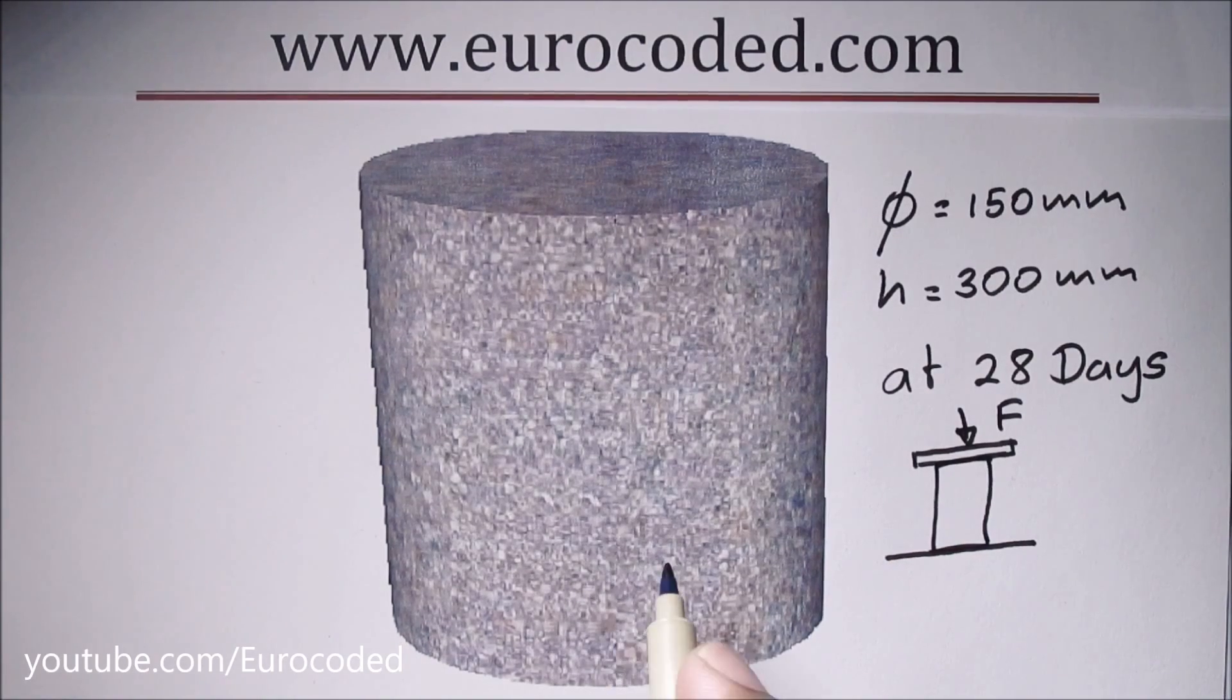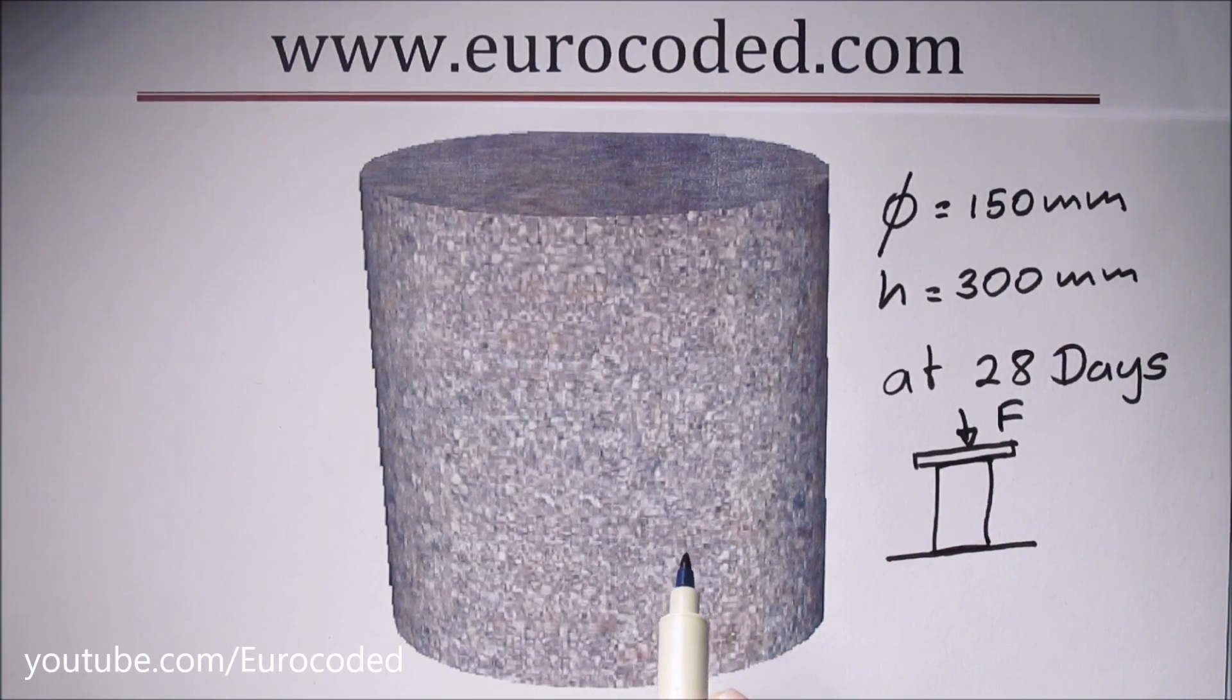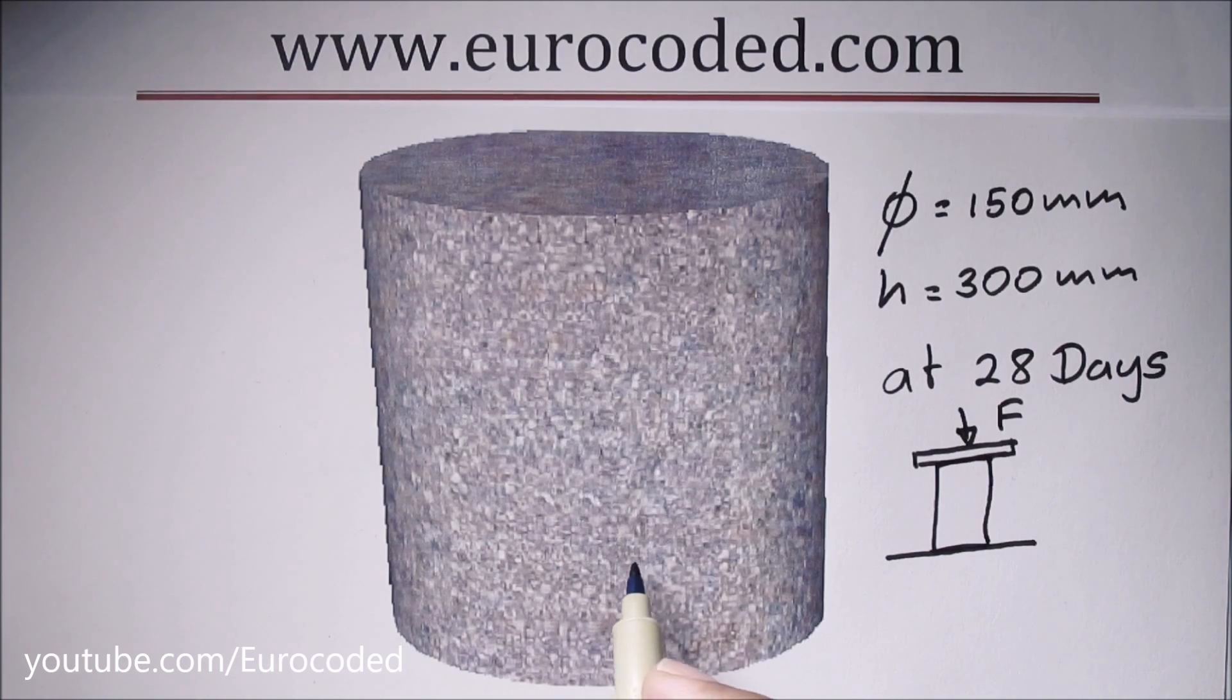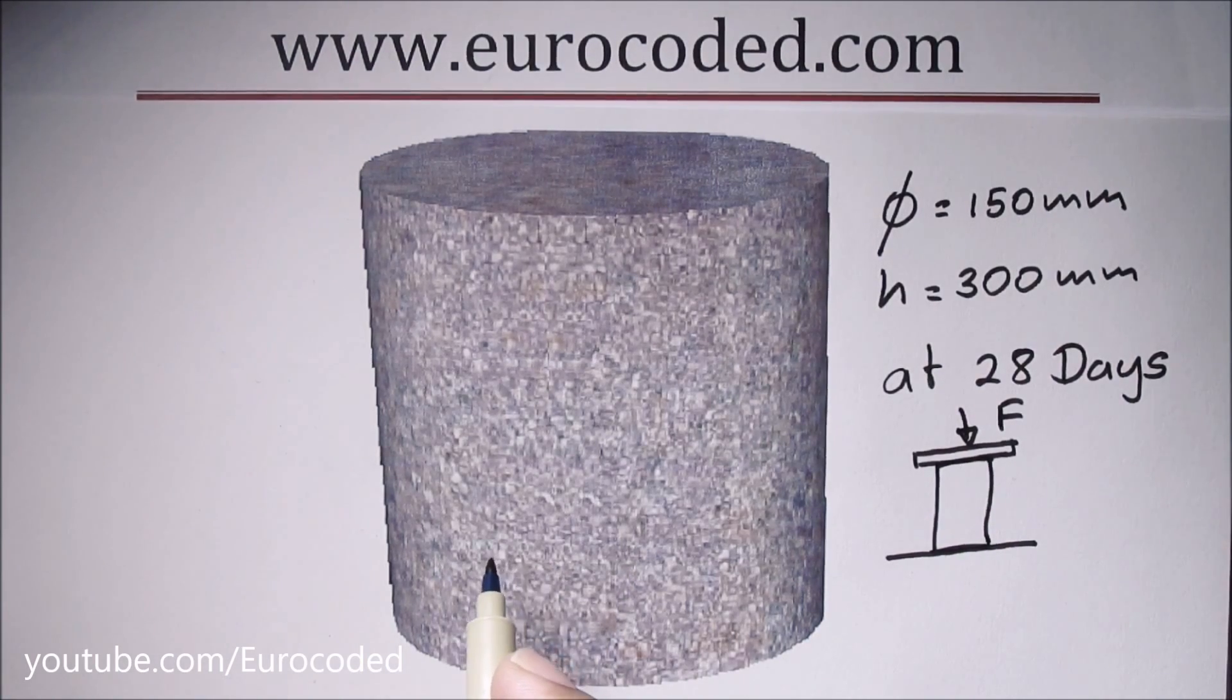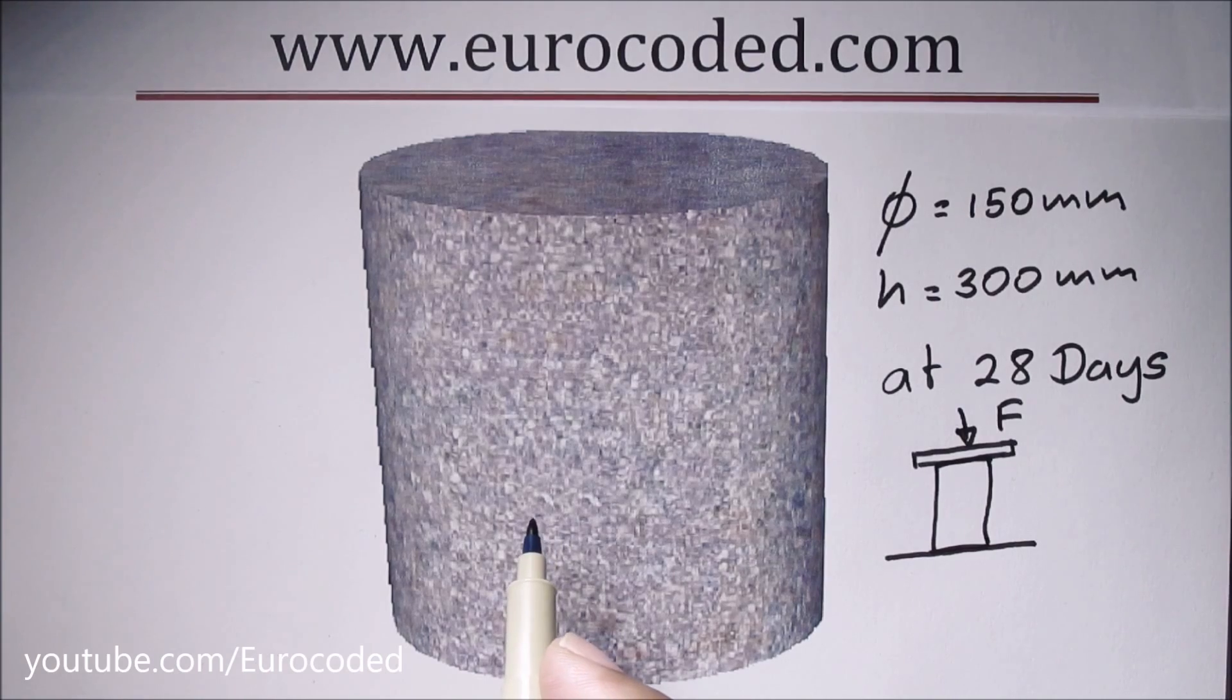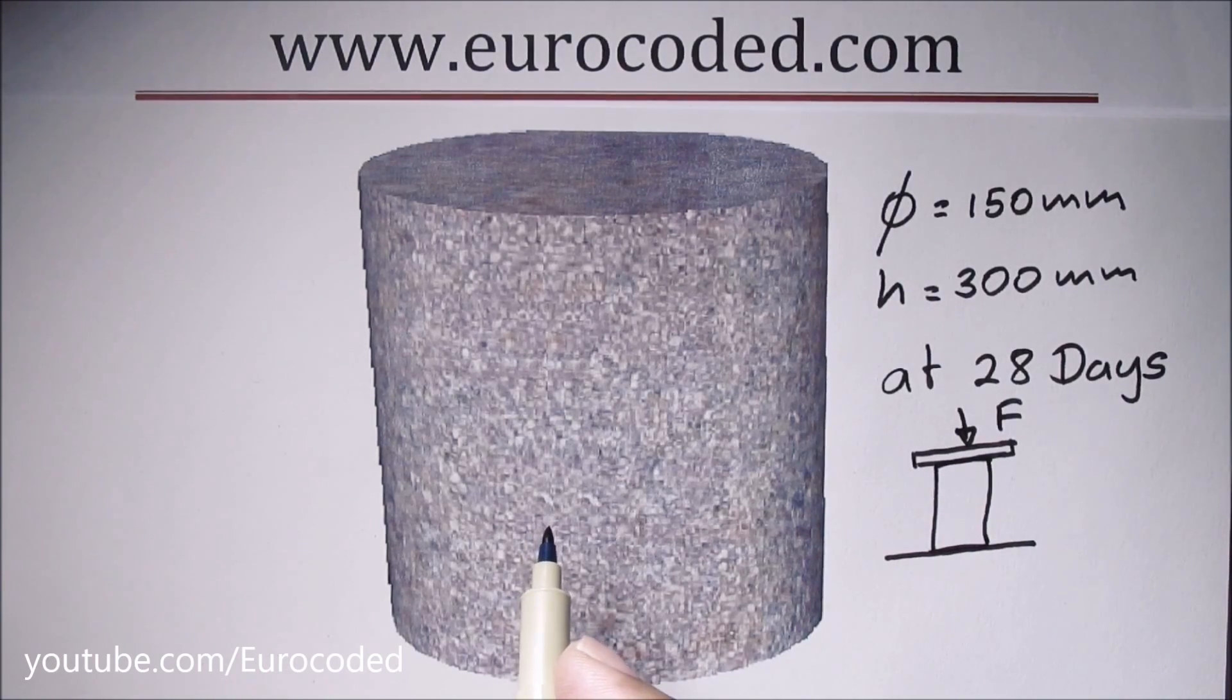Now you might think 28 days is a long time to wait to verify whether the concrete has gained intended strength. Therefore, what we do is we take several test specimens and test them at 3 days and 7 days. Based on the results of those tests, then we can use respective values to predict the 28 days compressive strength of the concrete.